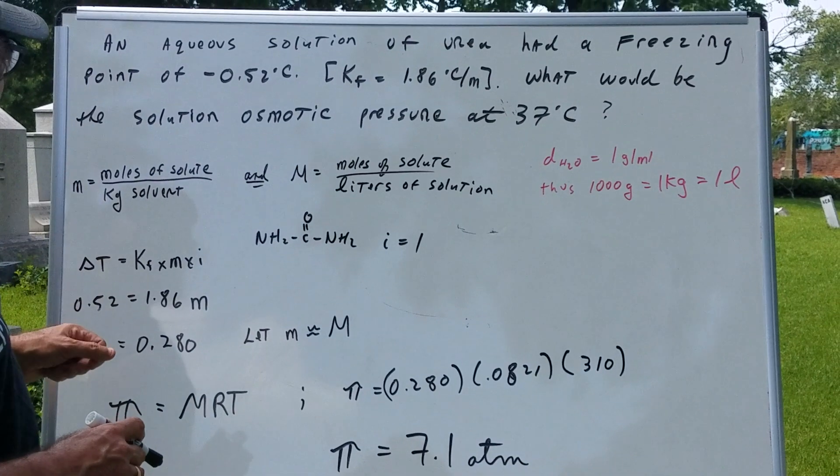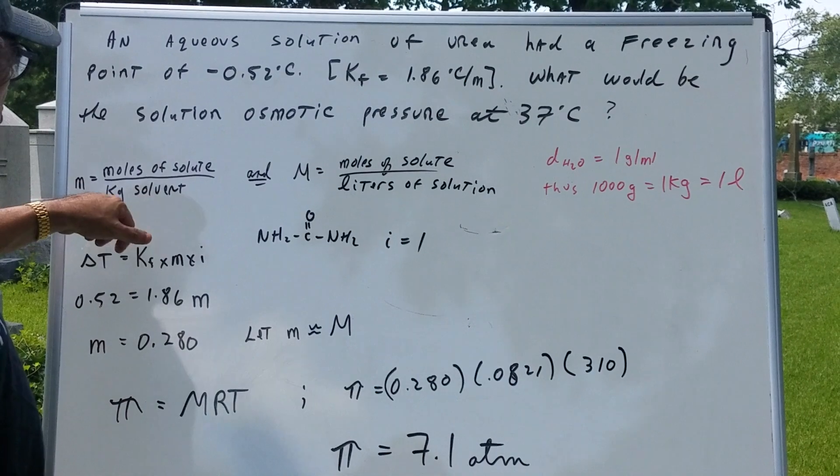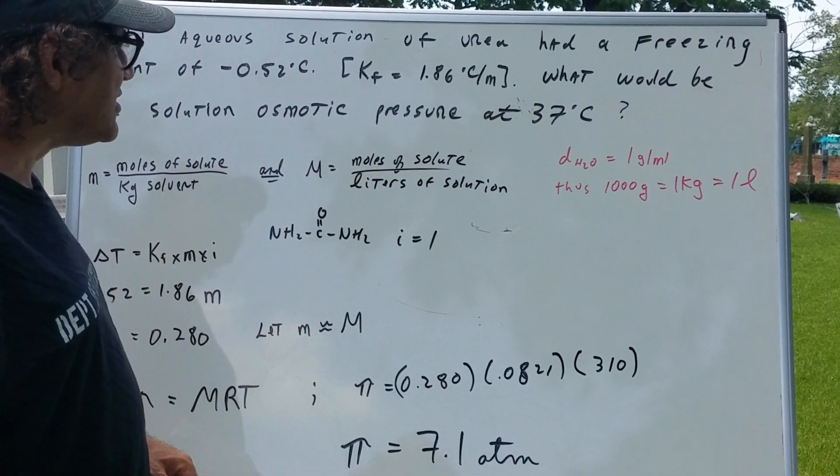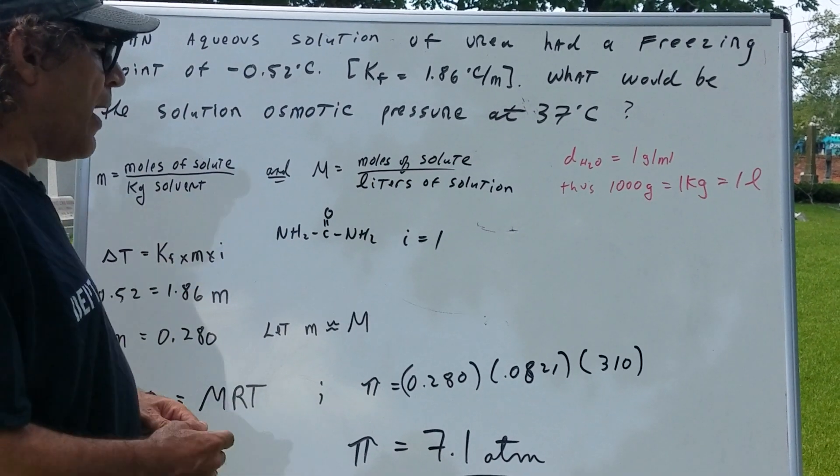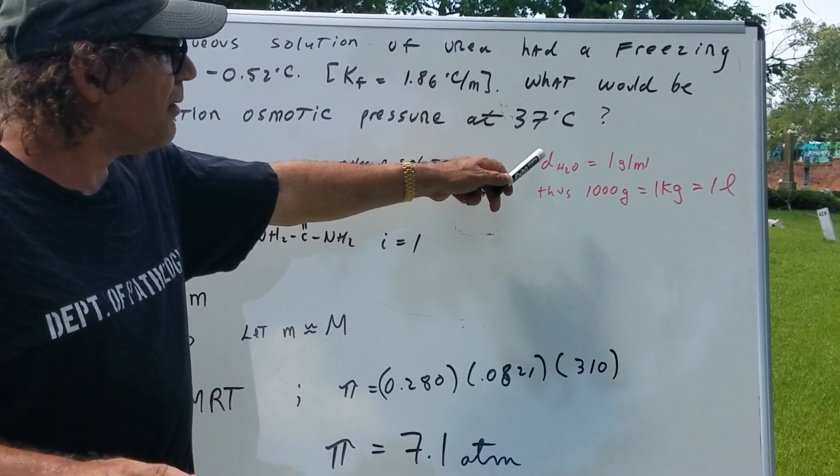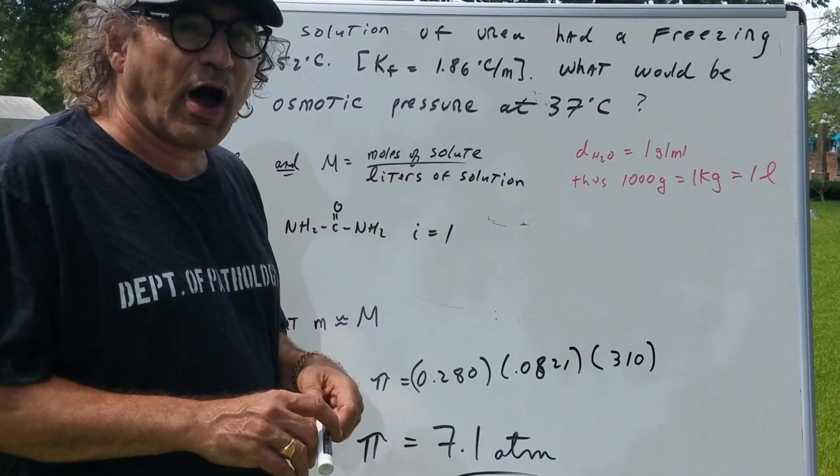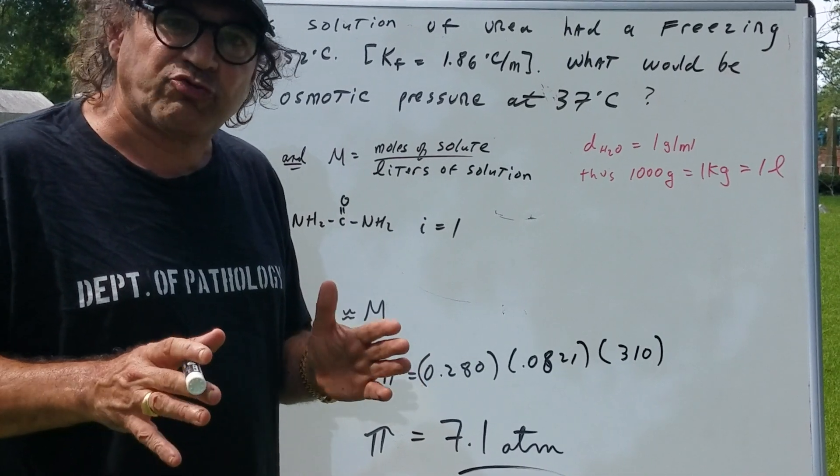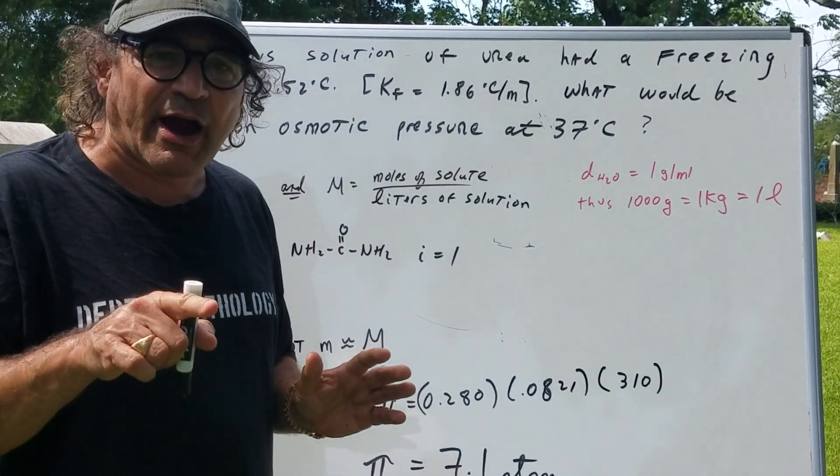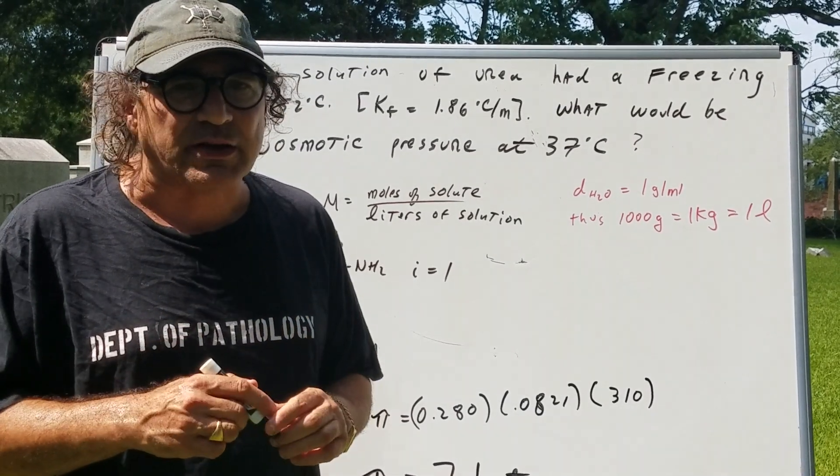Before we start this, let me review two things. Molality is the moles of solute over kilograms of solvent. And molarity is moles of solute over the liters of solution. Now, I'm going to be using a very special trick in a little while. But we need to understand that I can only use this trick because the density of water is equal to 1 gram per mL. So therefore, 1,000 grams, which is a kilogram, is equivalent to 1 liter. So that means that molarity is approximately equal to molality. That's going to be the gimmick.